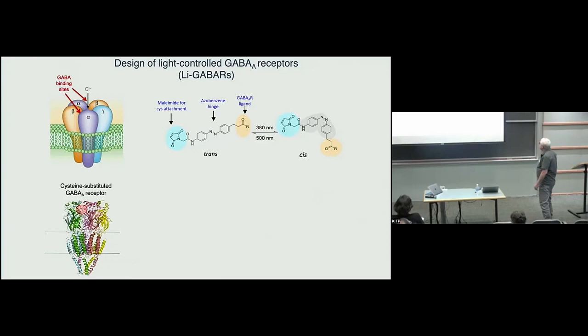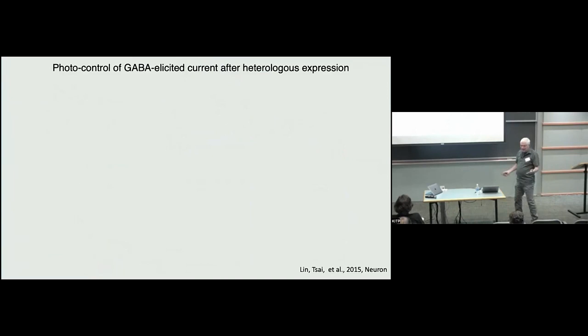Once you tether this in the right place, this end of the molecule just falls into the binding site that GABA normally occupies. And that's kind of shown here. Here's one of these molecules tethered on that orange amino acid, which is now a cysteine. And here's the molecule. This is the azobenzene part of it. And here's the ligand sitting in the GABA binding site in the trans configuration. But if you photoisomerize it, you see it sort of kinks back and it opens up the binding site for GABA to bind. So we've converted this to a light antagonized GABA receptor.